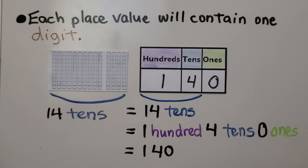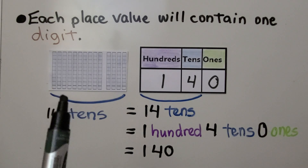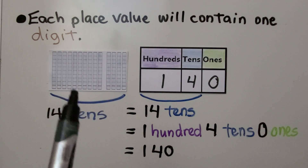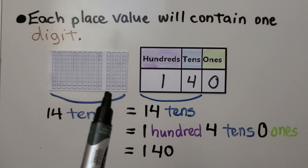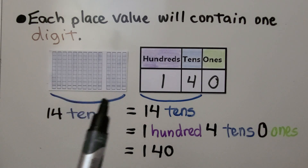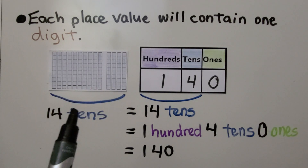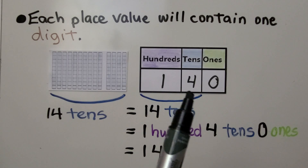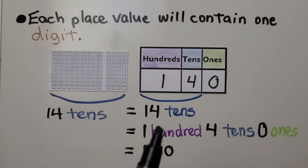Each place value will contain one digit. We have 14 tens: we have 10 tens that makes 100, and four more tens. That's 10 and 4 — that's 14 tens. It's 100, four tens, and zero ones. That's 140.